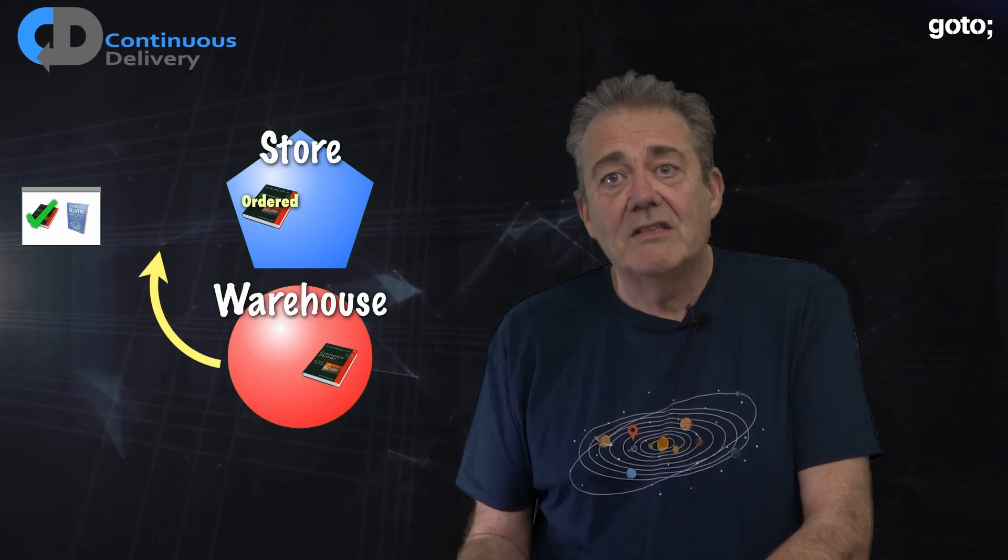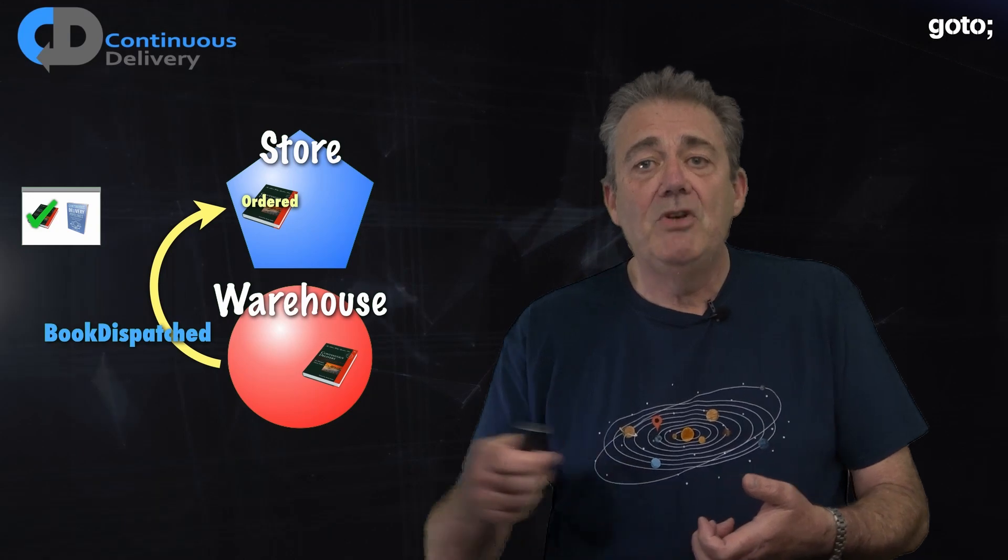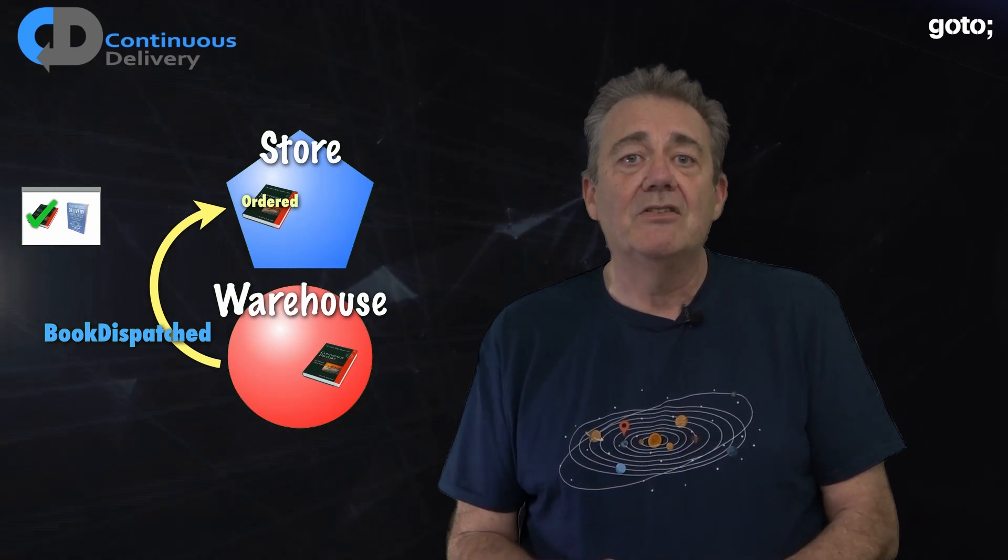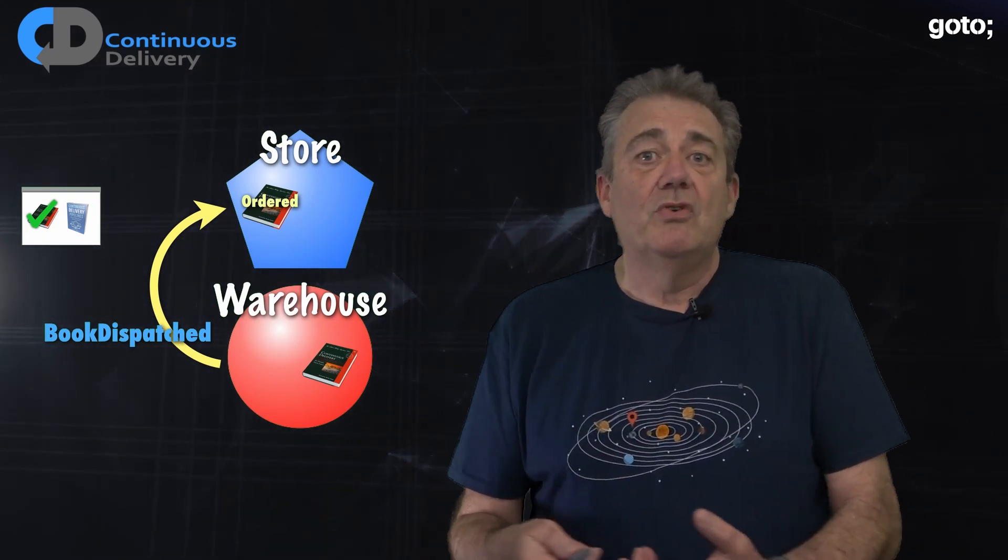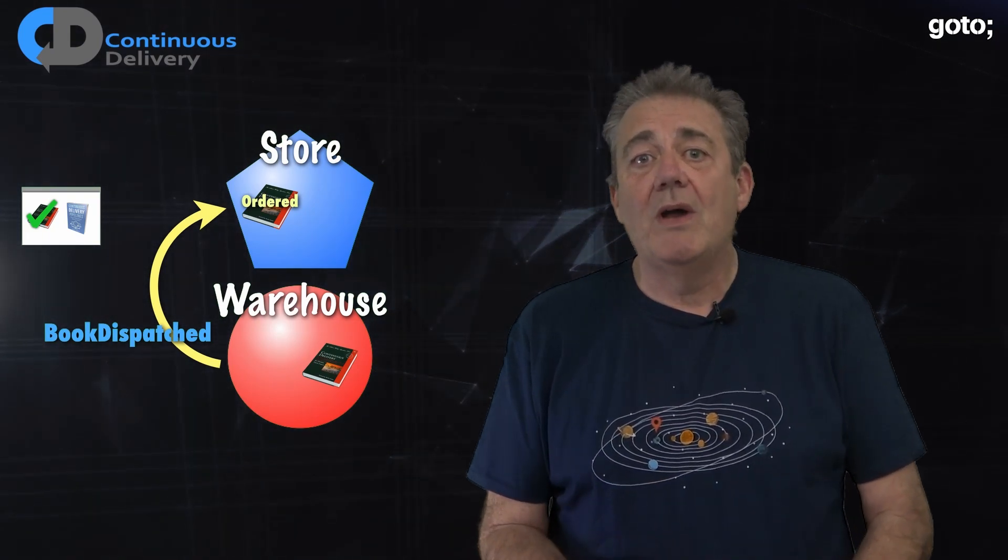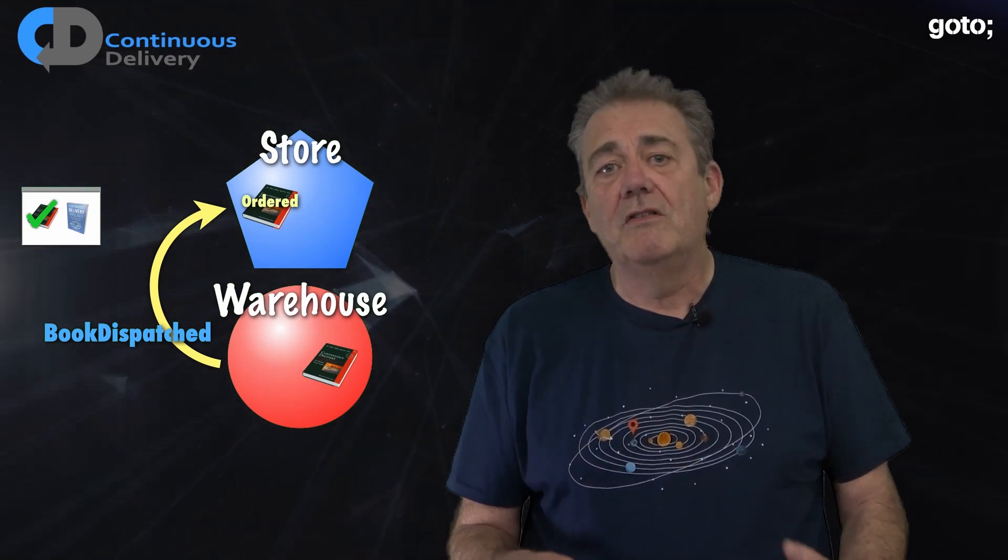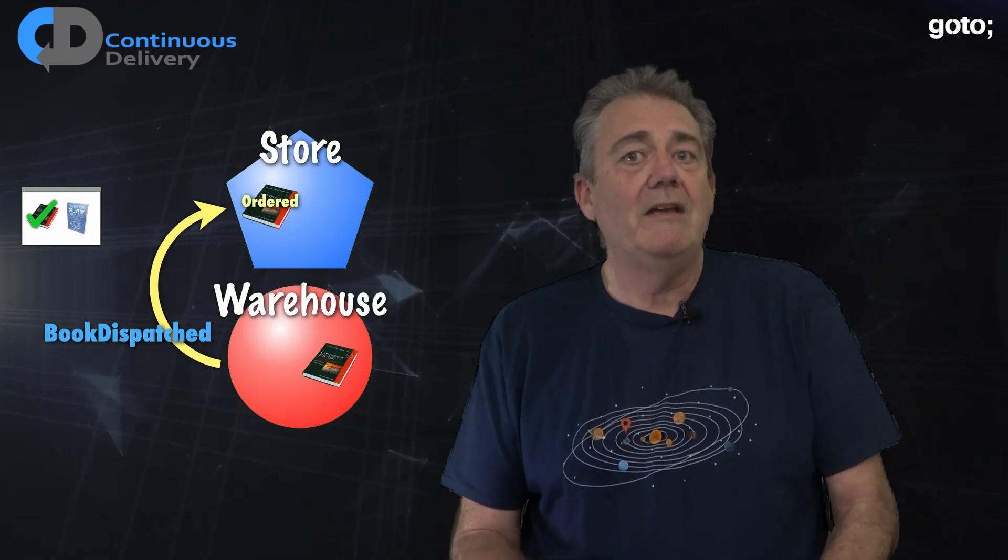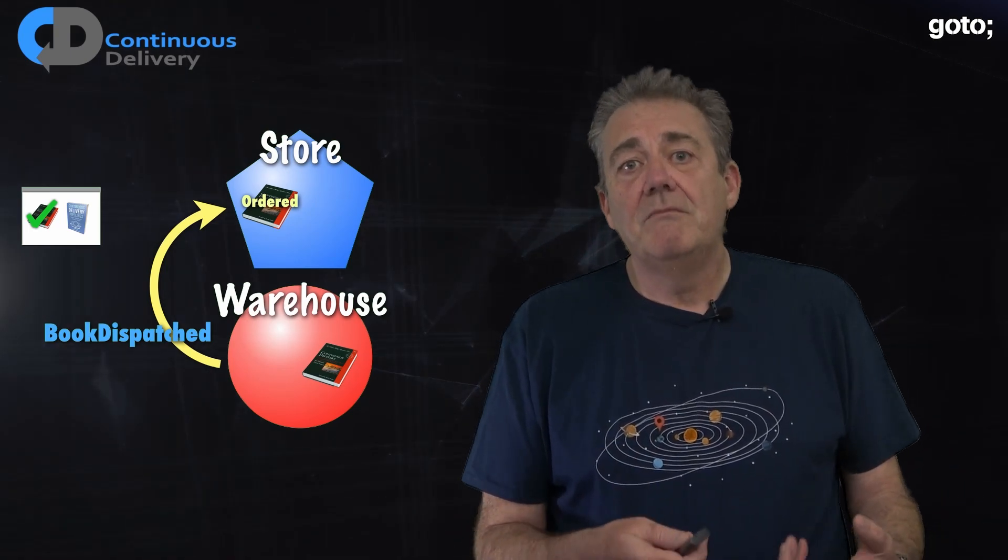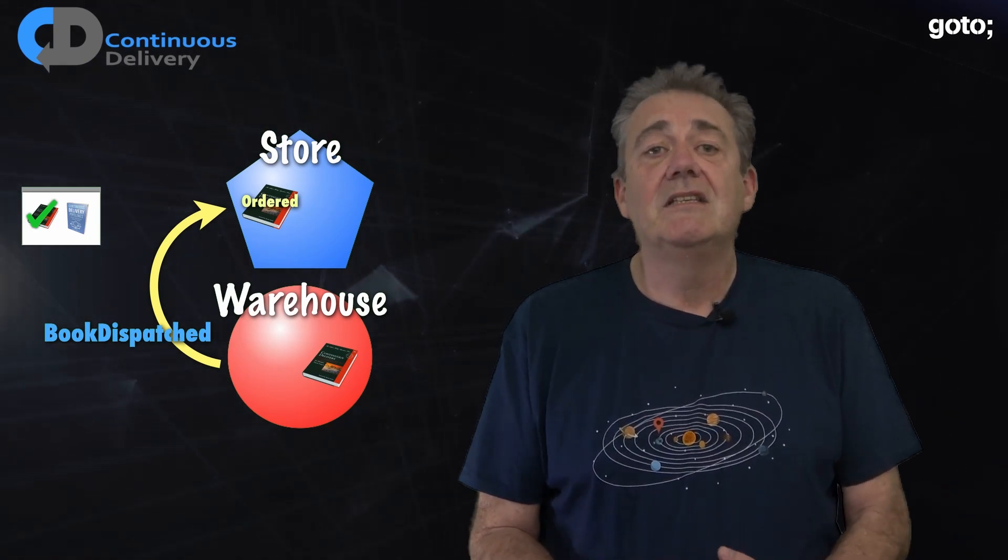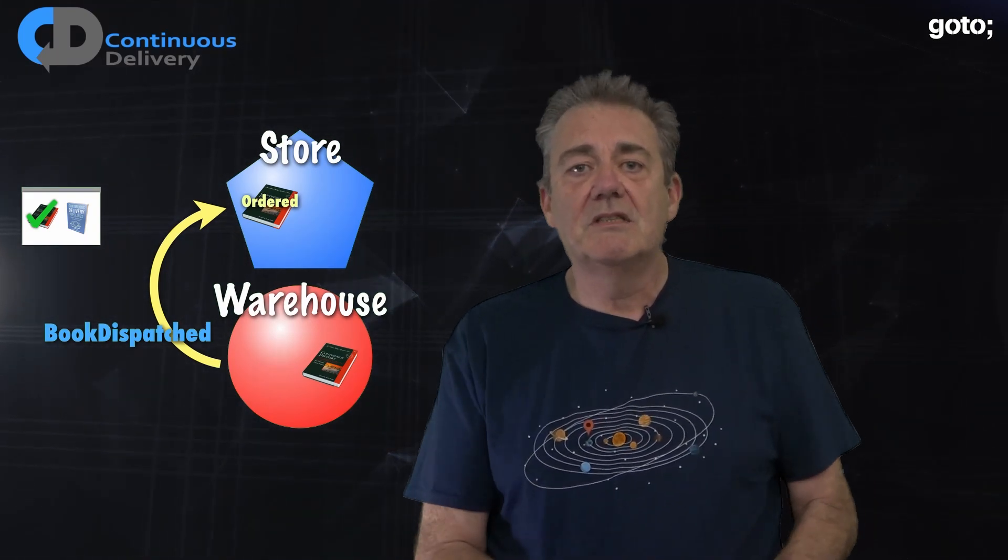Finally, when the warehouse is finished processing the dispatch of the book, it sends out a new message saying book dispatched to confirm that they were on their way. Our bookstore handles that message in the same way that it handles any other message. There's a discrete message, no special back door for responses like async await for example. This message comes in through the front door and the content of the message tells us what it's related to. In this case, an order for a particular account for the rather excellent book, continuous delivery.